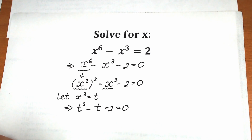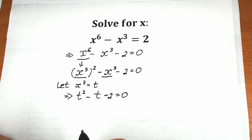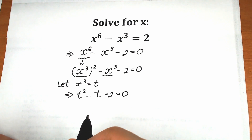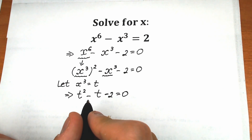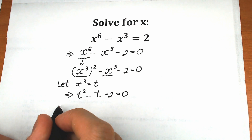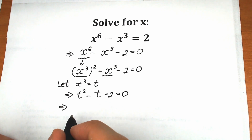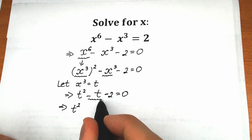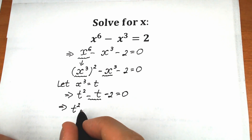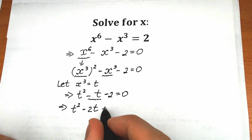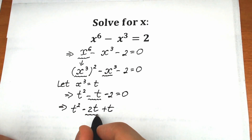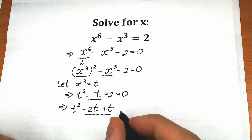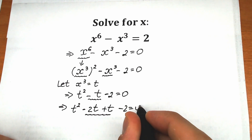I want to show you a really great approach — I'm not going to find the discriminant directly. Instead, I'll use a great trick: instead of minus t, I want to write minus 2t plus t, which is absolutely the same thing. So we have t squared minus 2t plus t minus 2 equals 0.